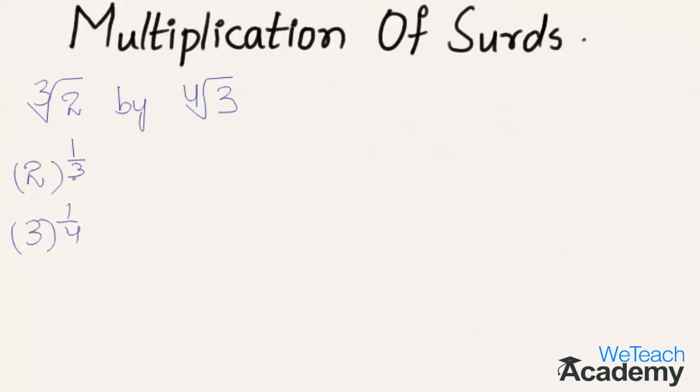As the orders are different, let us reduce them to the same order by finding the LCM of 4 and 3. The LCM is 3 times 4, which equals 12.